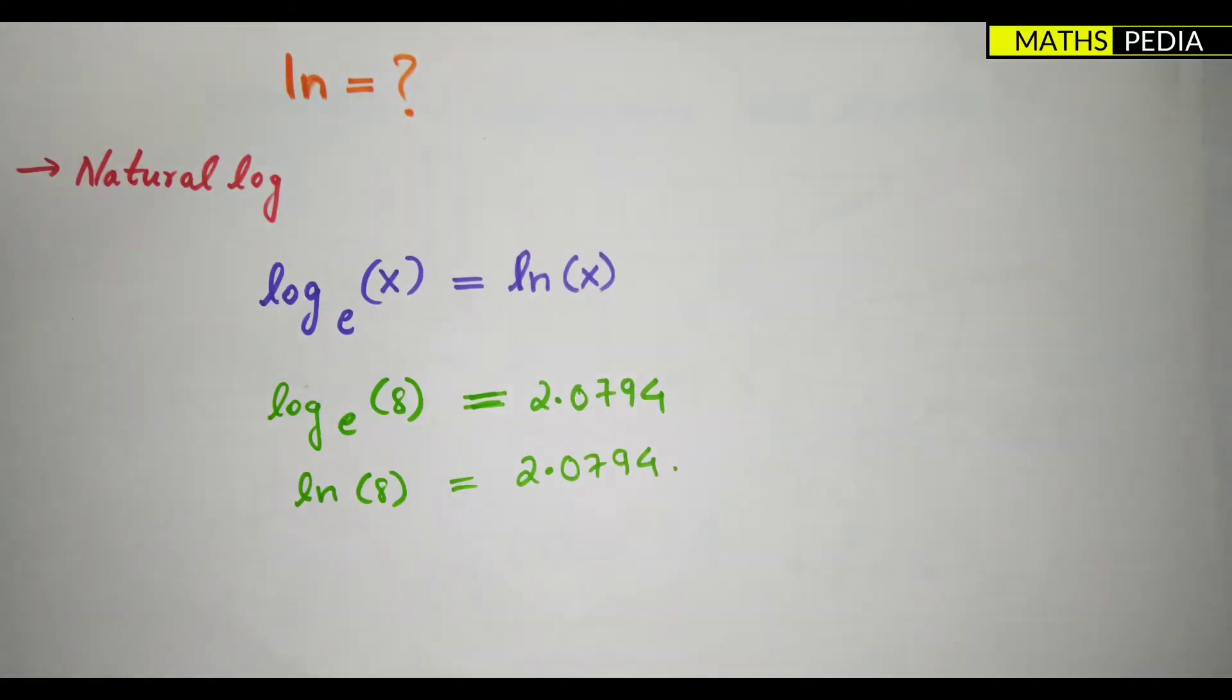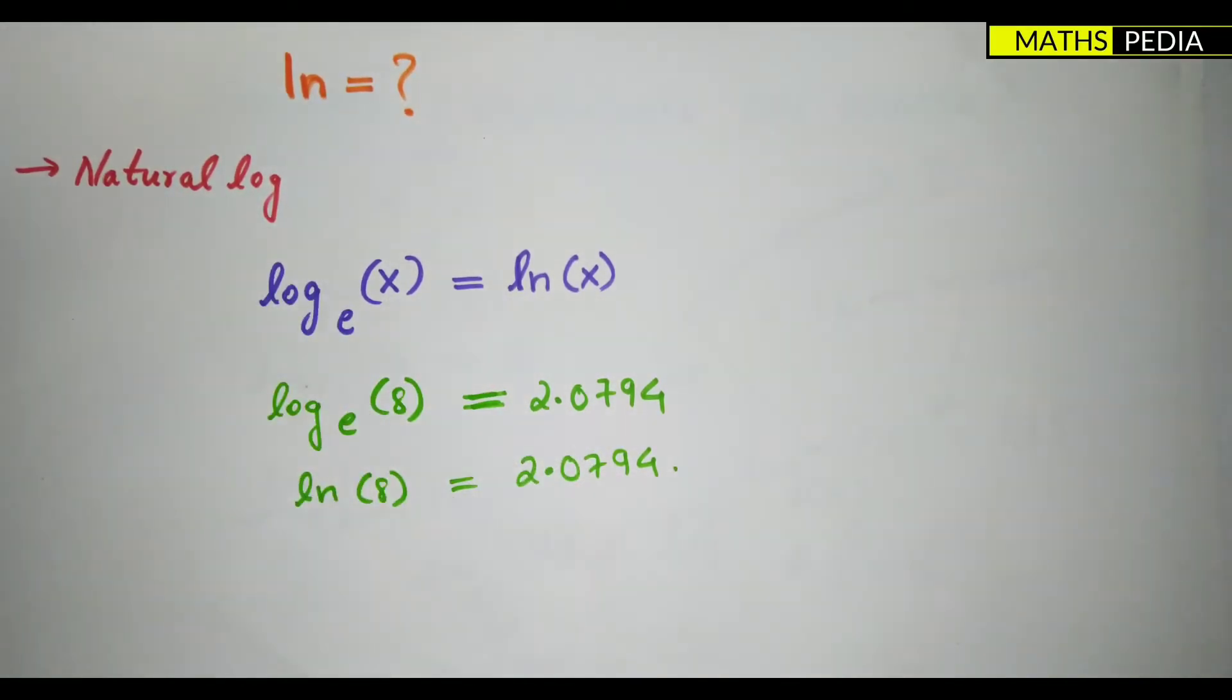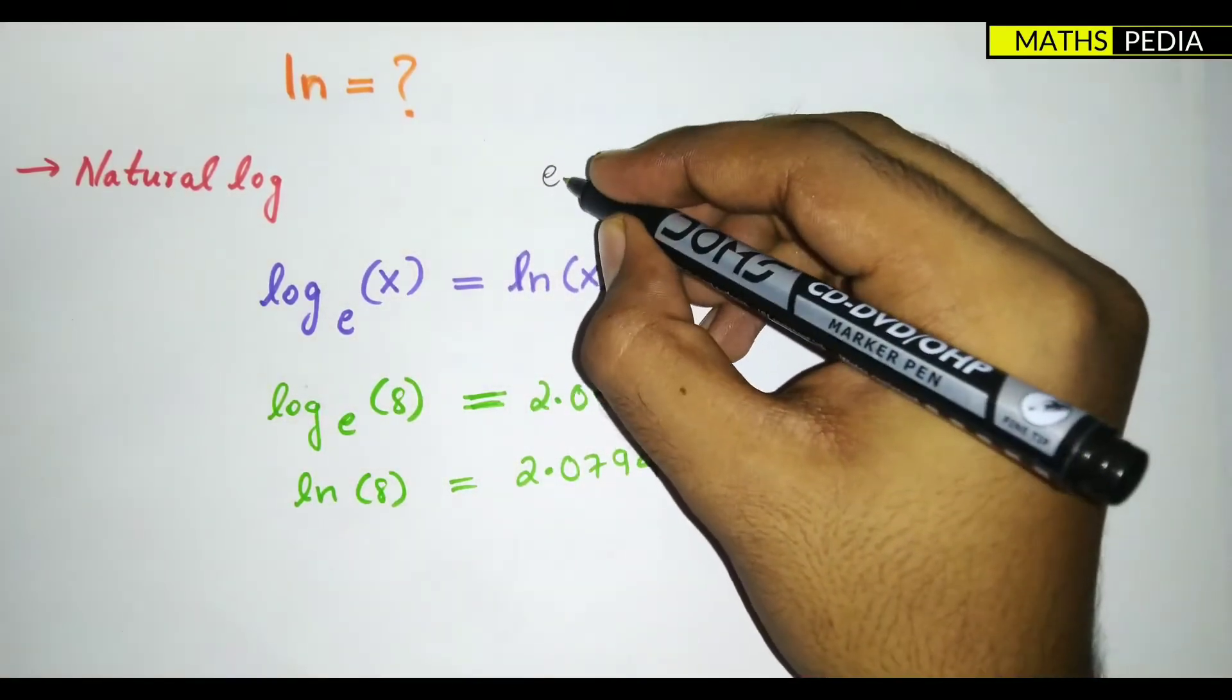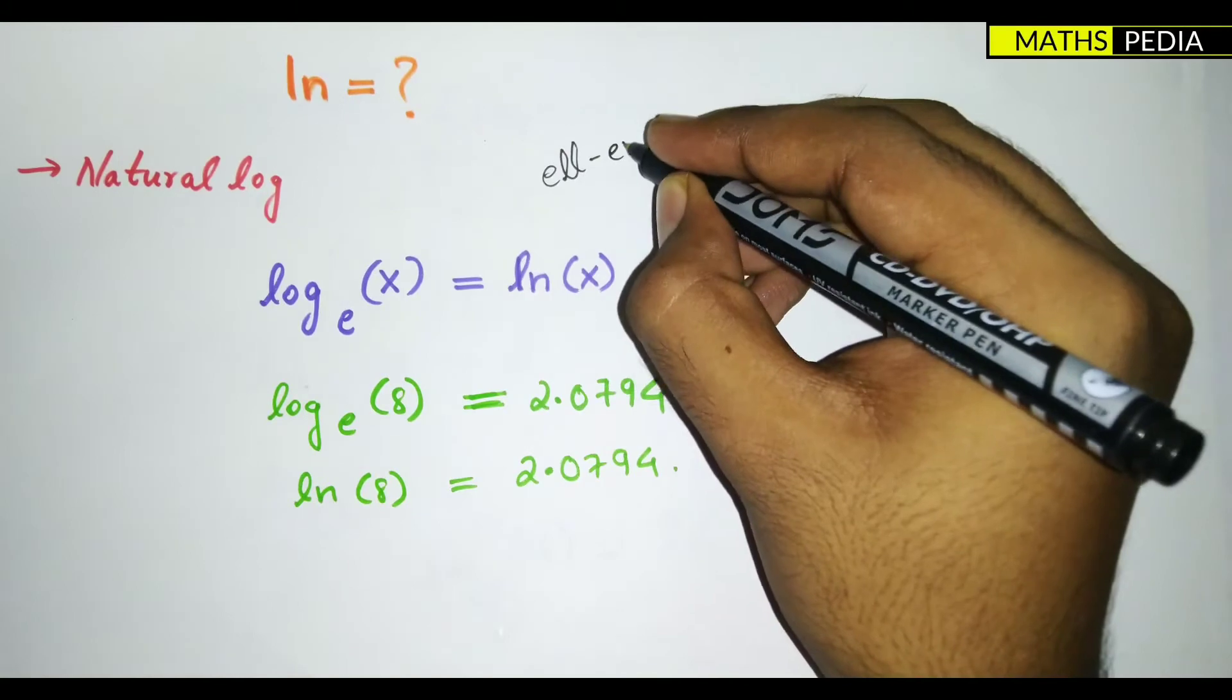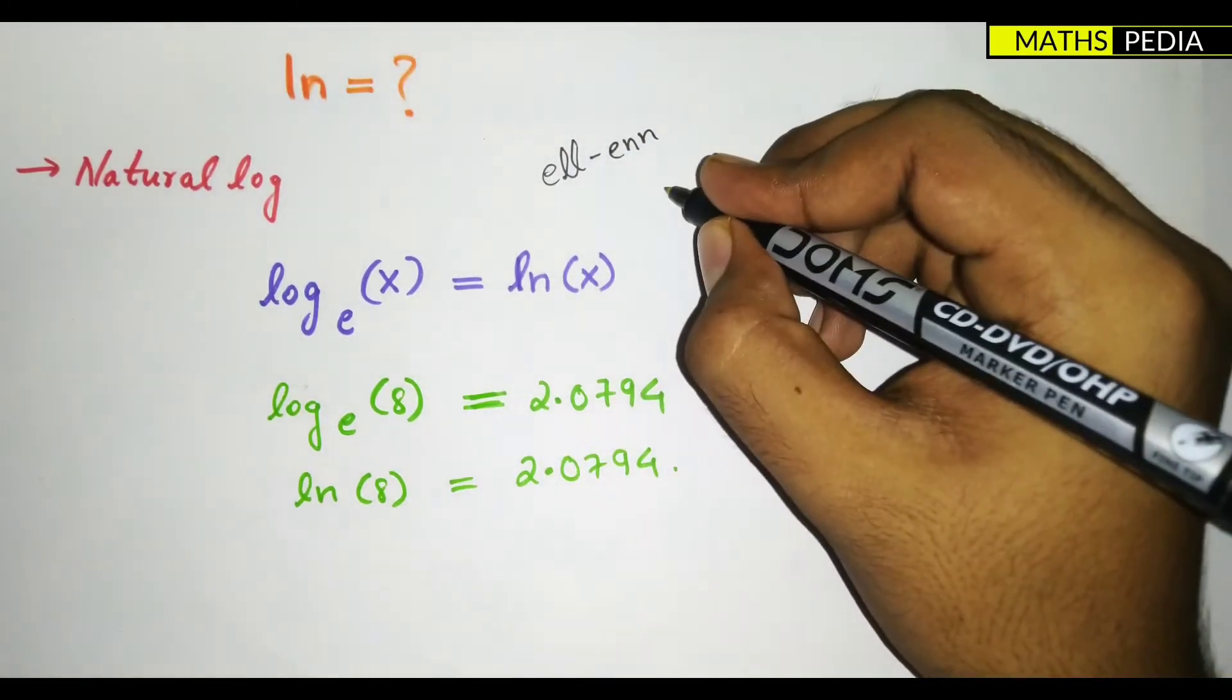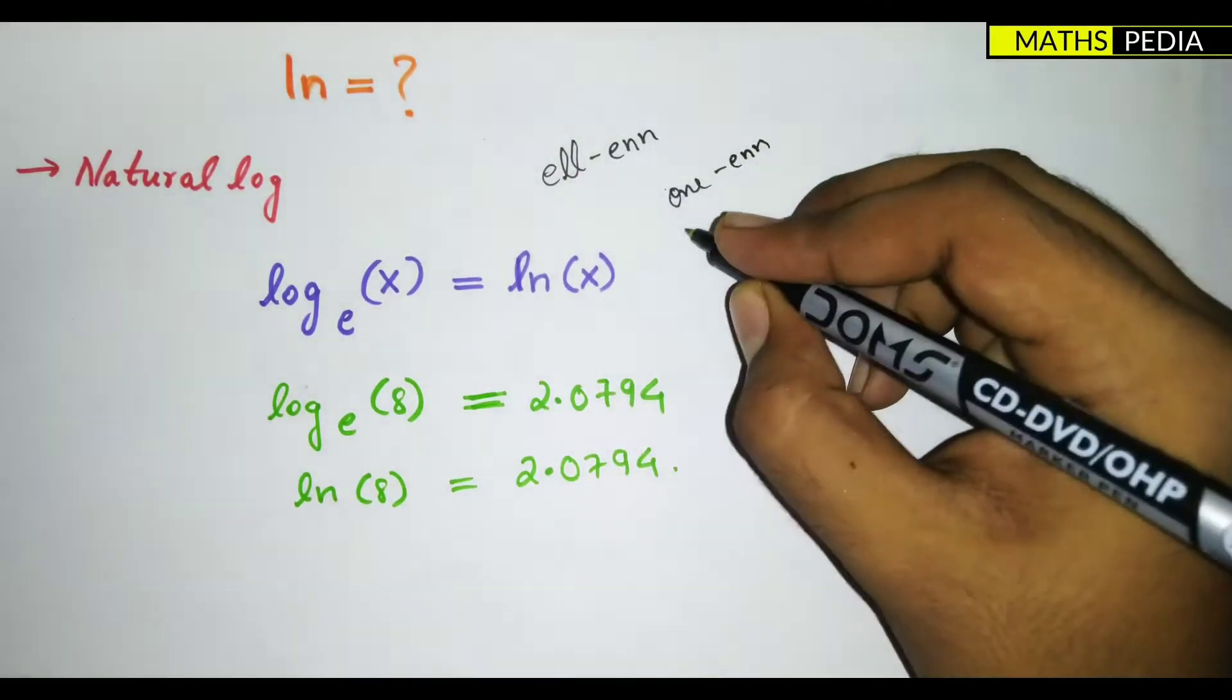So basically what is this? How is it different from a log? So we'll just see. It is also called natural log. And how to pronounce this? We can pronounce it as 'l and n', that's ln. It is not 'one one n', it's not 'one n'.